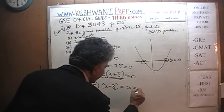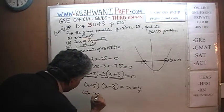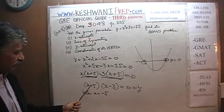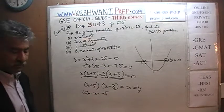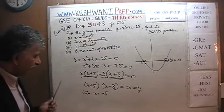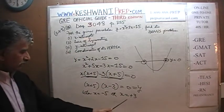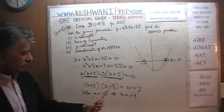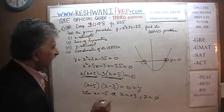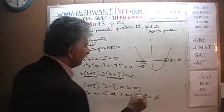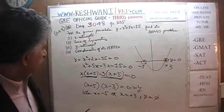So y is going to be 0 when x is equal to negative 5 — because if you put in negative 5, negative 5 and positive 5 cancel each other, it becomes 0 — or when x is equal to positive 3. So our x-intercepts are negative 5 and positive 3. Those are our x-intercepts. We are done with that part.